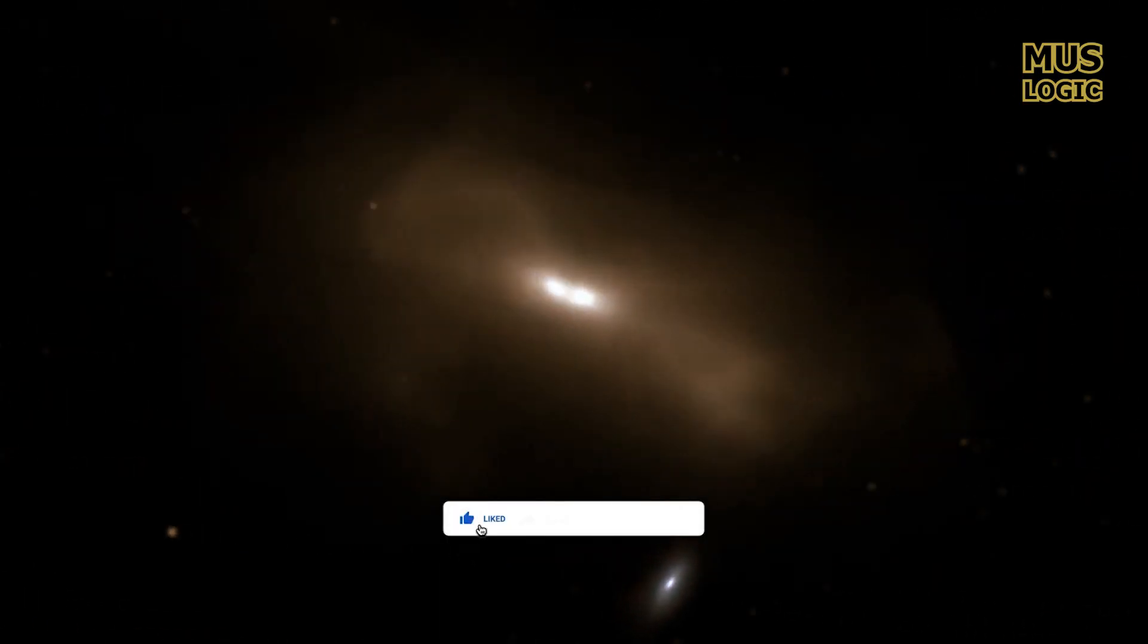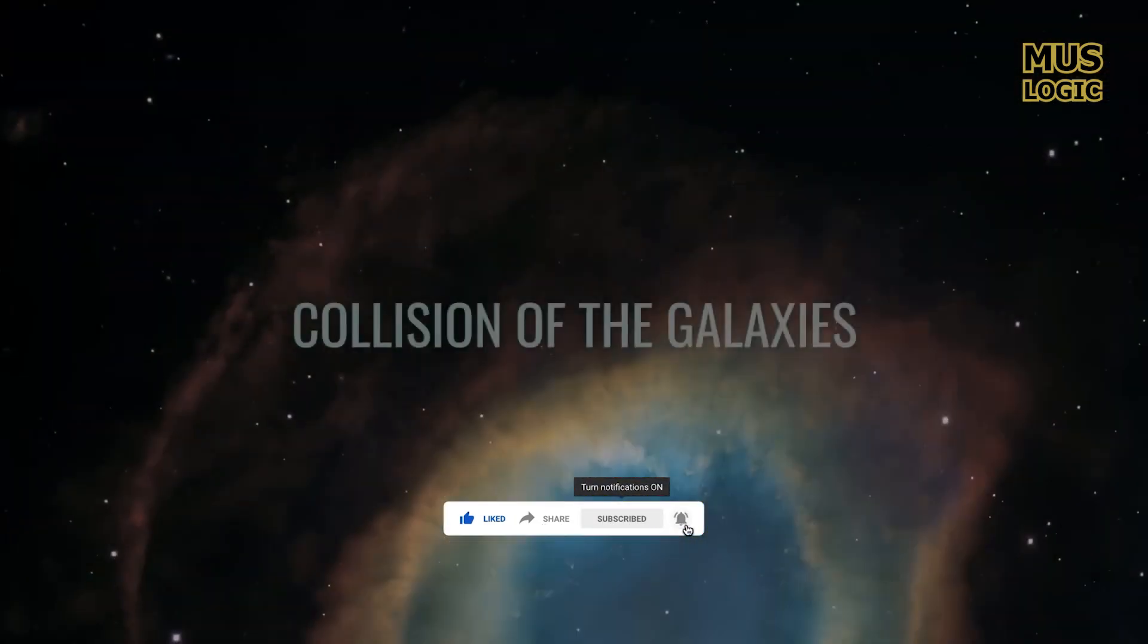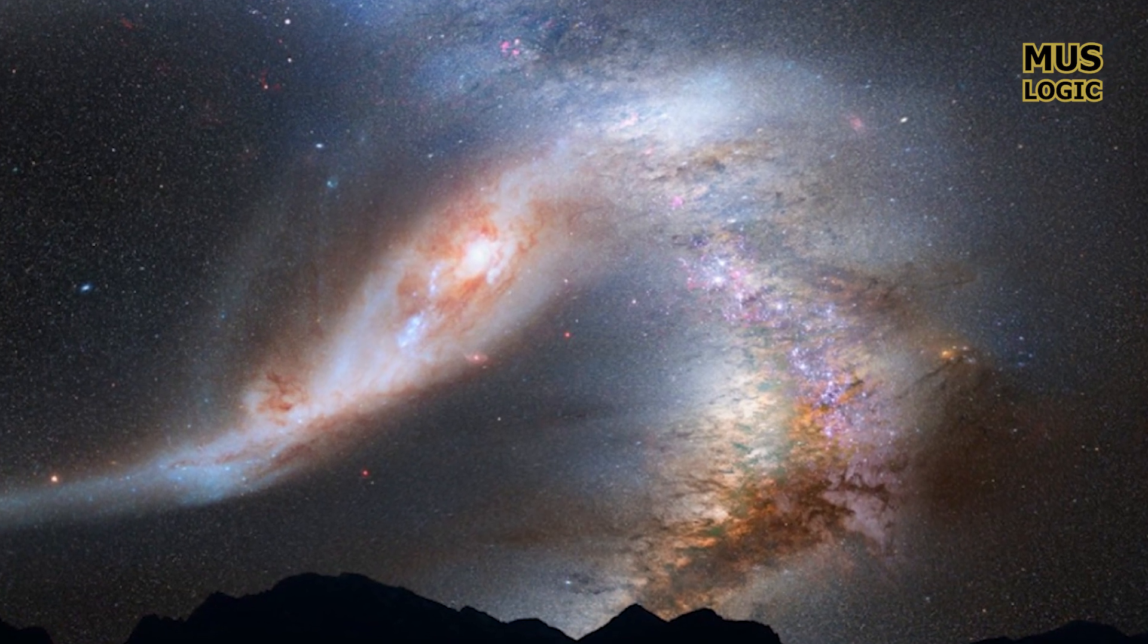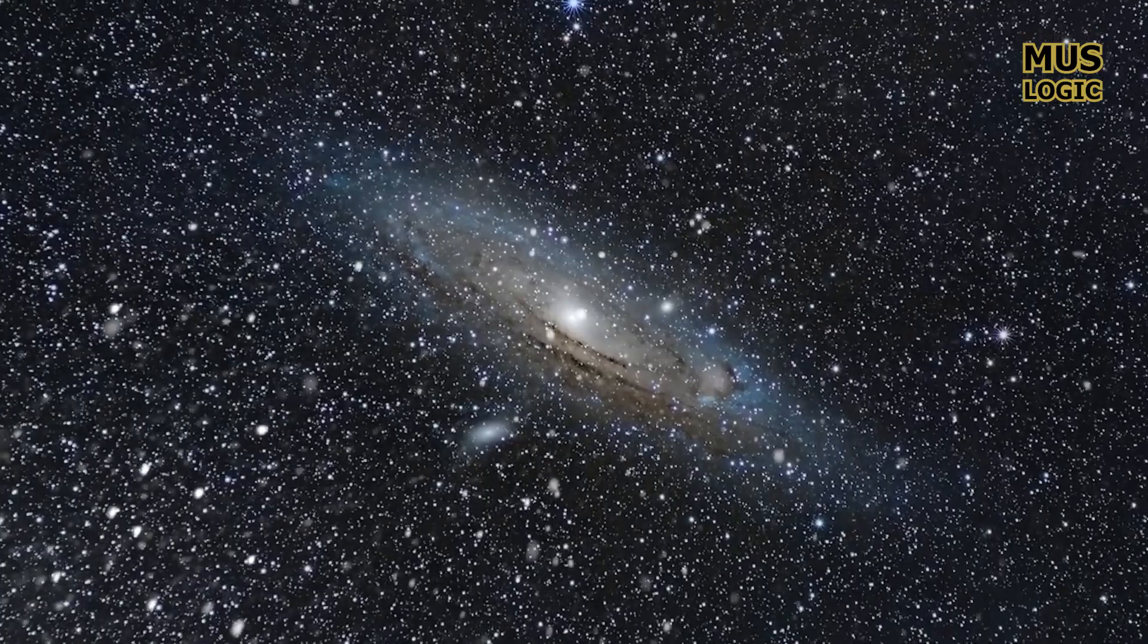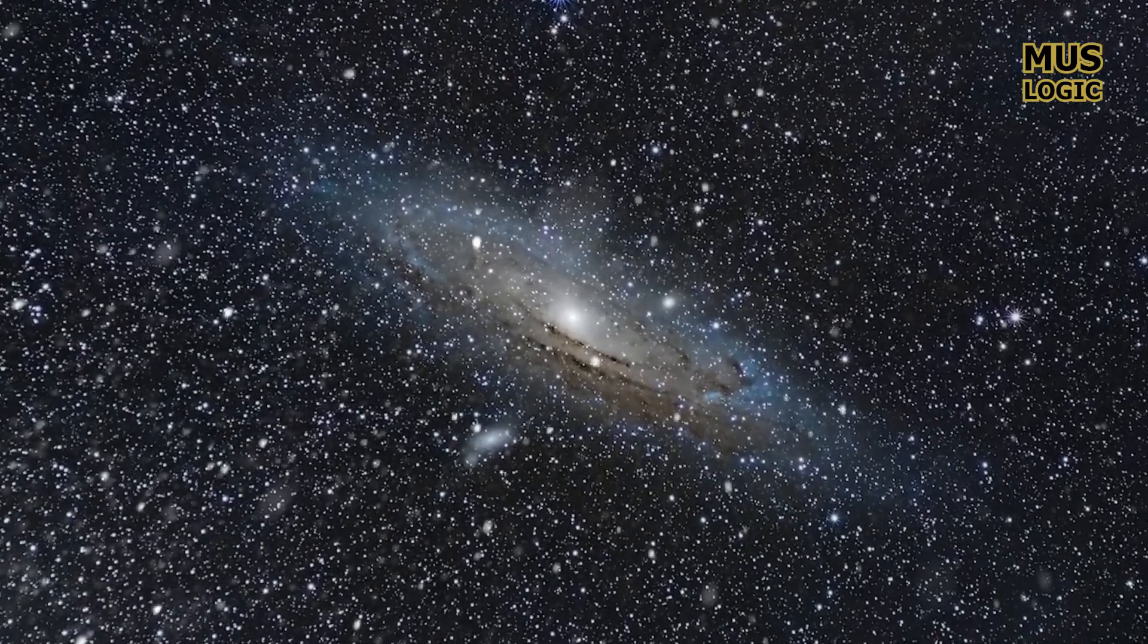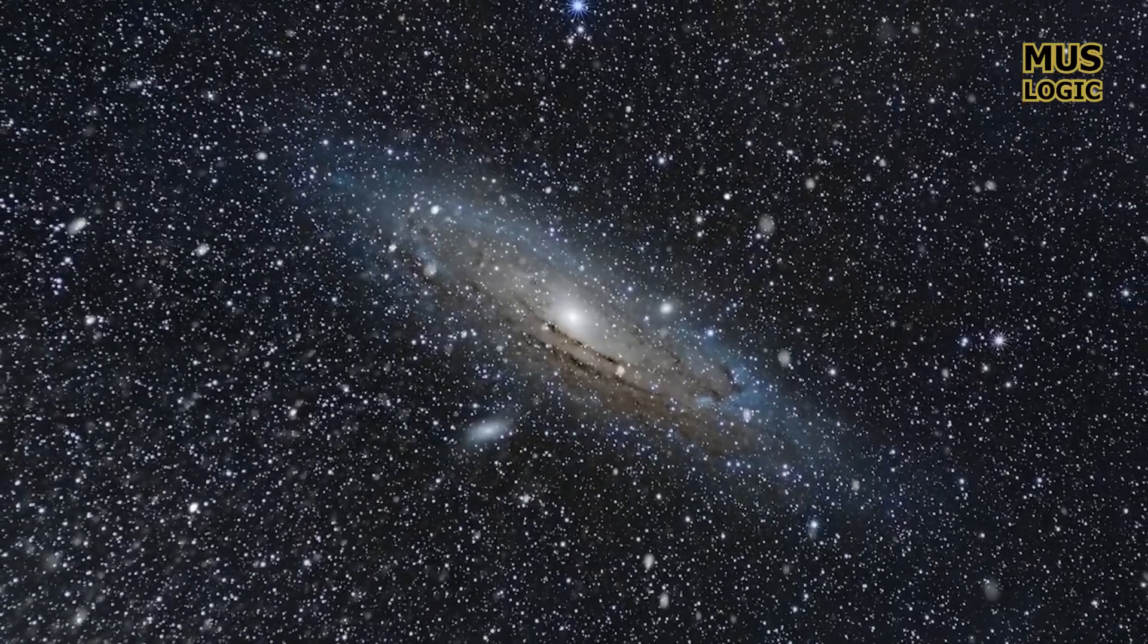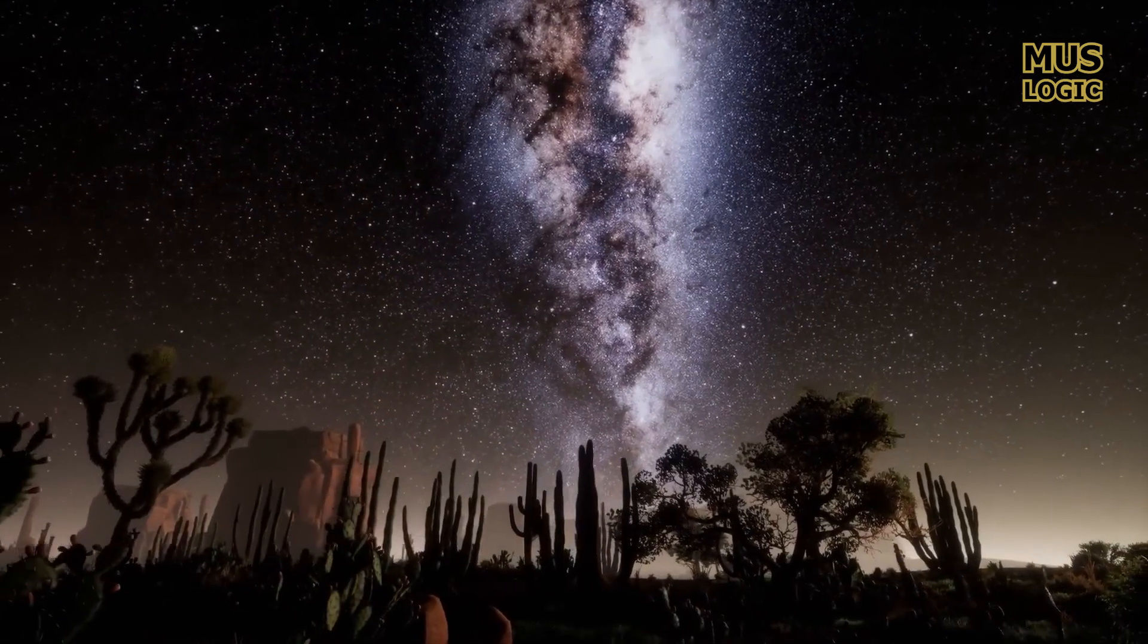The Milky Way and Andromeda are currently en route to a collision that will create a new star system. There is no longer any question that the Milky Way and the Andromeda galaxy will collide at some point, even if we cannot see it. Currently, the two entities are pursuing one another at a pace of around 70 miles per second. A galactic collision will therefore unavoidably occur in the future.